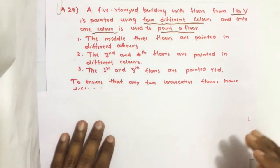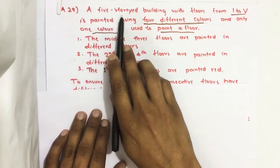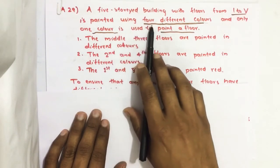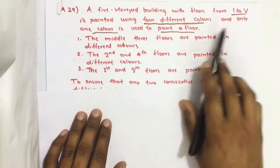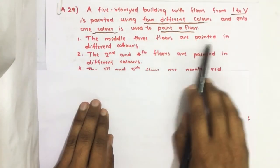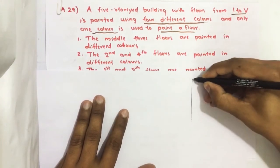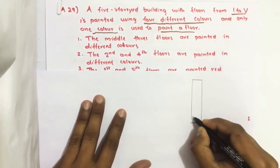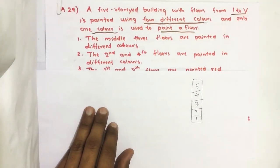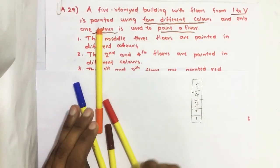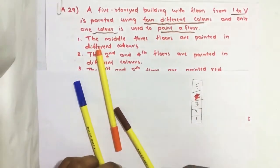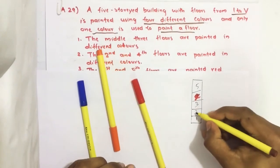Let us analyze this. We have a five-storey building with floors one to five, painted with four different colors, one color per floor. For statement one — the middle three floors are painted in different colors — we draw a five-floor building and paint floors two, three, and four in different colors.